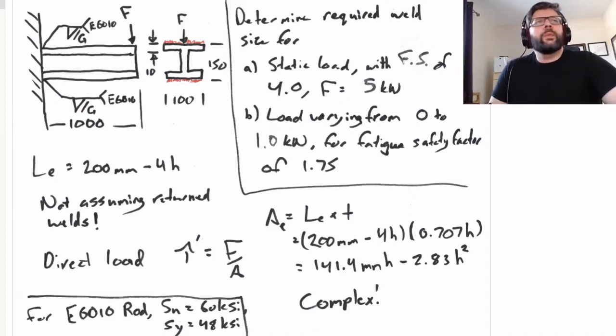All right, so let's do this example here. We've got an I-beam and we're welding it to something, let's say another I-beam. Dimensions: it's 100 millimeters wide, 150 millimeters high, and then 1 meter long. We're welding it with some E6010 rod.